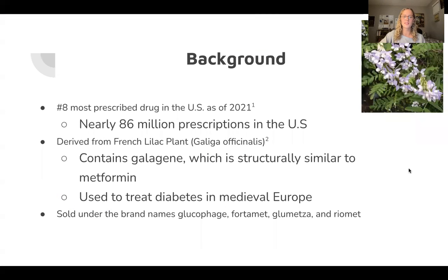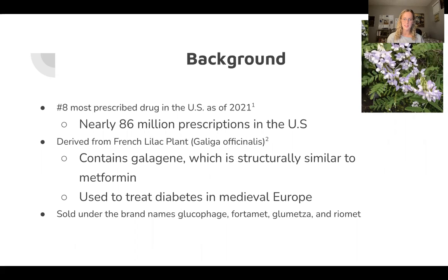Metformin is the number eight most prescribed drug in the U.S. A lot of this has to do with type 2 diabetes, as metformin is thought to be the safest and most effective form of treatment. Type 2 diabetes is insulin-resistant, so the form of treatment for hyperglycemia, which is increased blood glucose levels, is usually insulin, but for type 2 diabetes another method is needed.